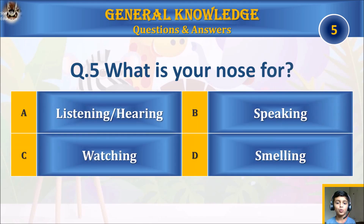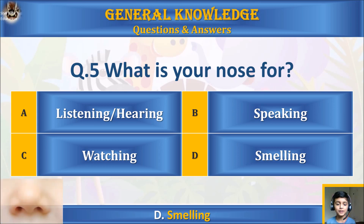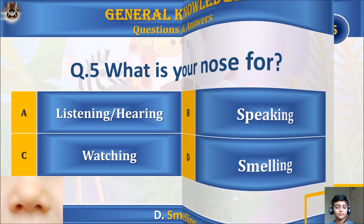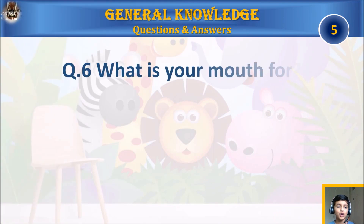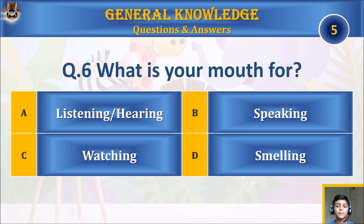Question five: what is your nose for? A) listening and hearing, B) speaking, C) watching, or D) smelling? Your time starts. The answer is D) smelling.